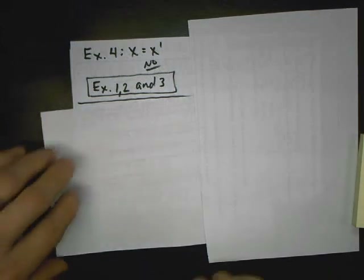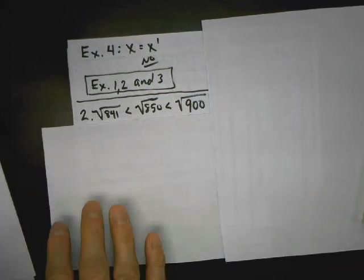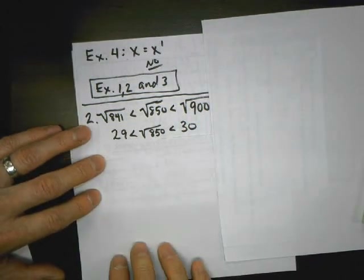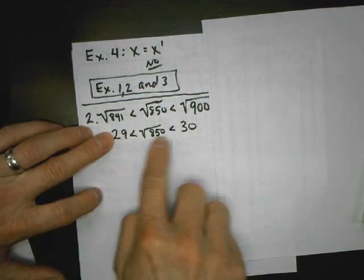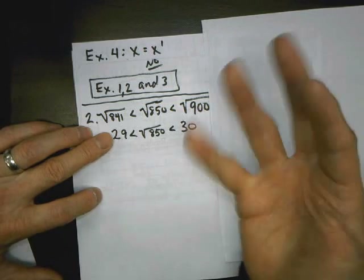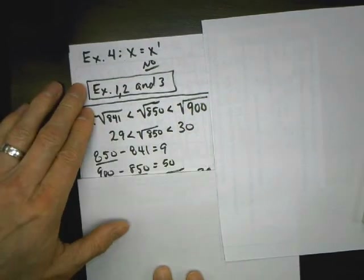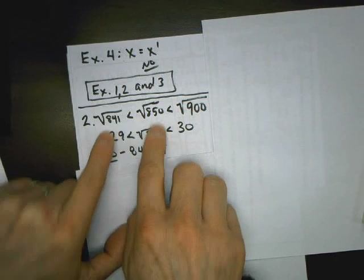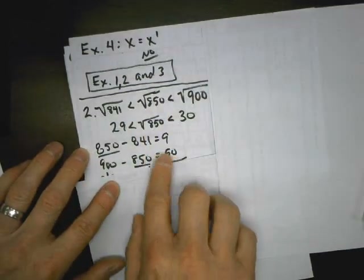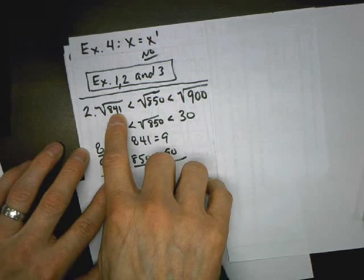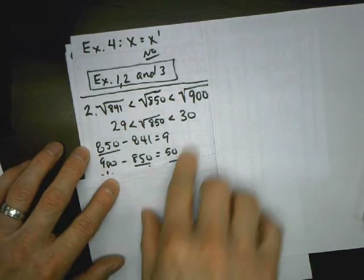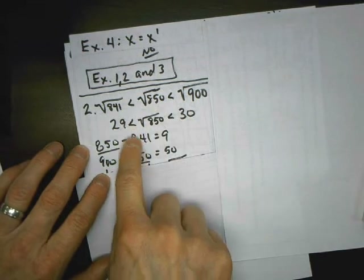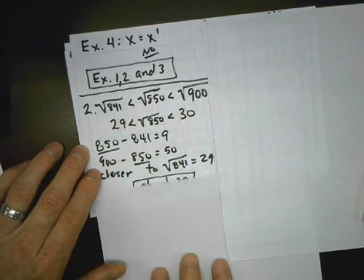Problem 2 asks which integer is the closest approximation. We've got to narrow it down. I look at my two perfect squares: 29 times 29 is 841, and 30 times 30 is 900. Those are consecutive. I narrow it down — 10 times 10 is 100, 20 times 20 is 400, 30 times 30 — and get the two that surround it. Then I ask: which one is it closer to? 850 is 9 away from 841 (the square root of which is 29) and 50 away from 900 (square root 30). So 850 is closer to 29.